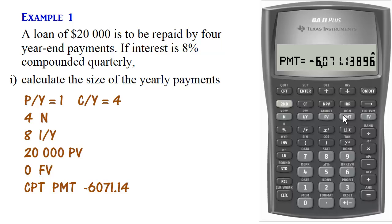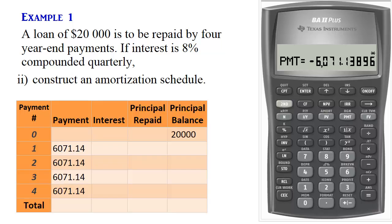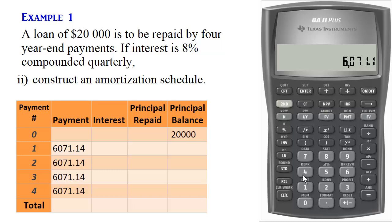Now let's construct the amortization schedule. We first need to re-input the payment to two decimal places, that is $6,071.14. It came out negative, so we make that negative and enter it as the payment.